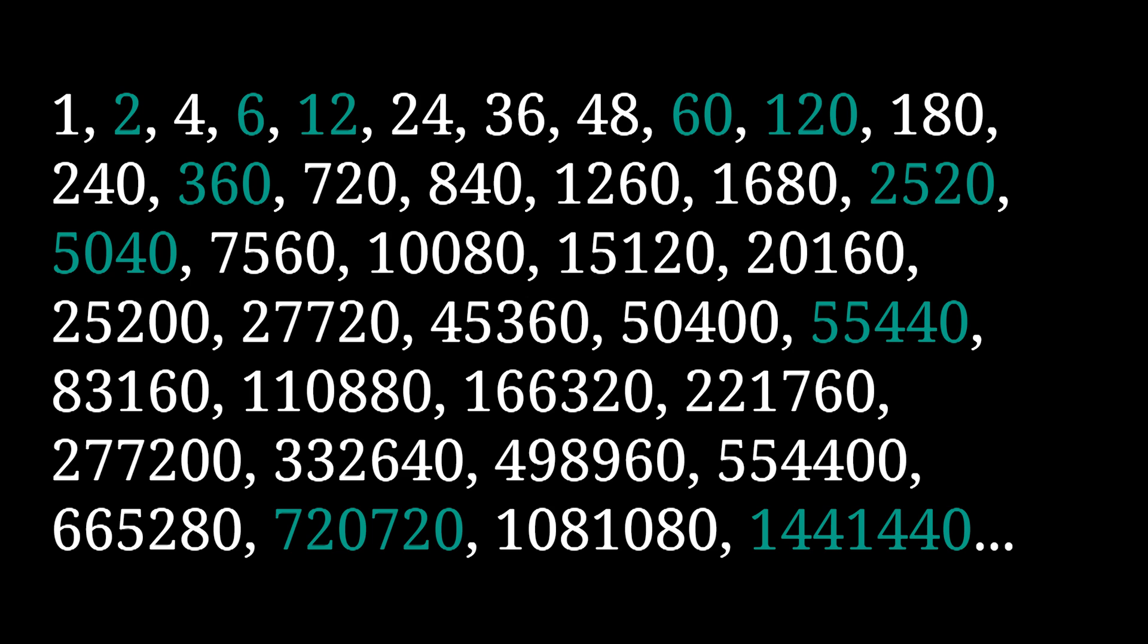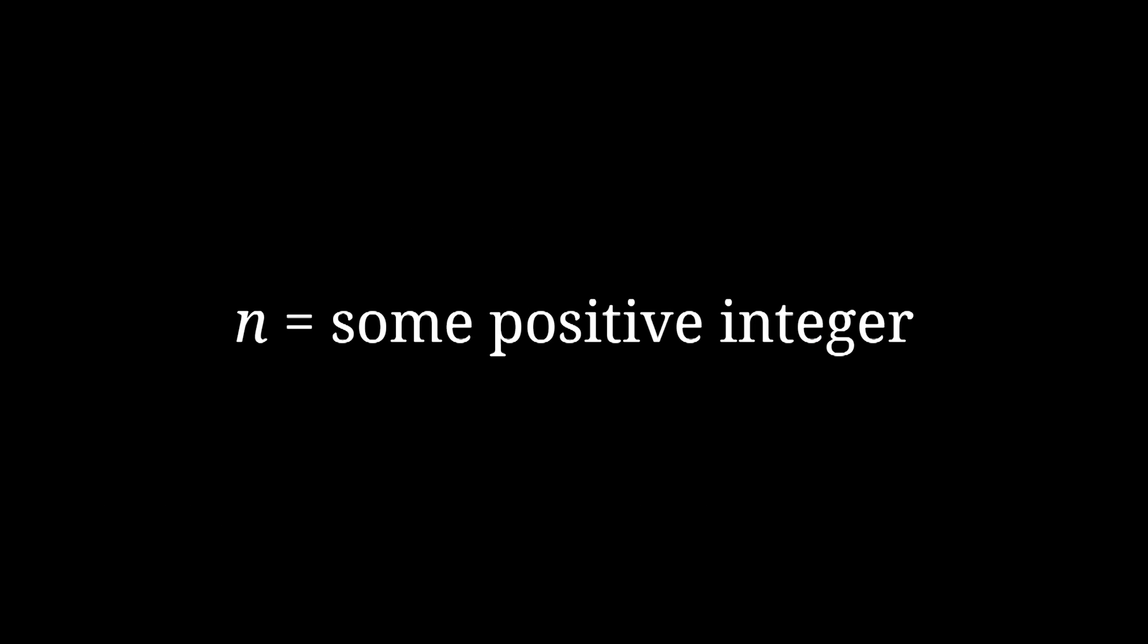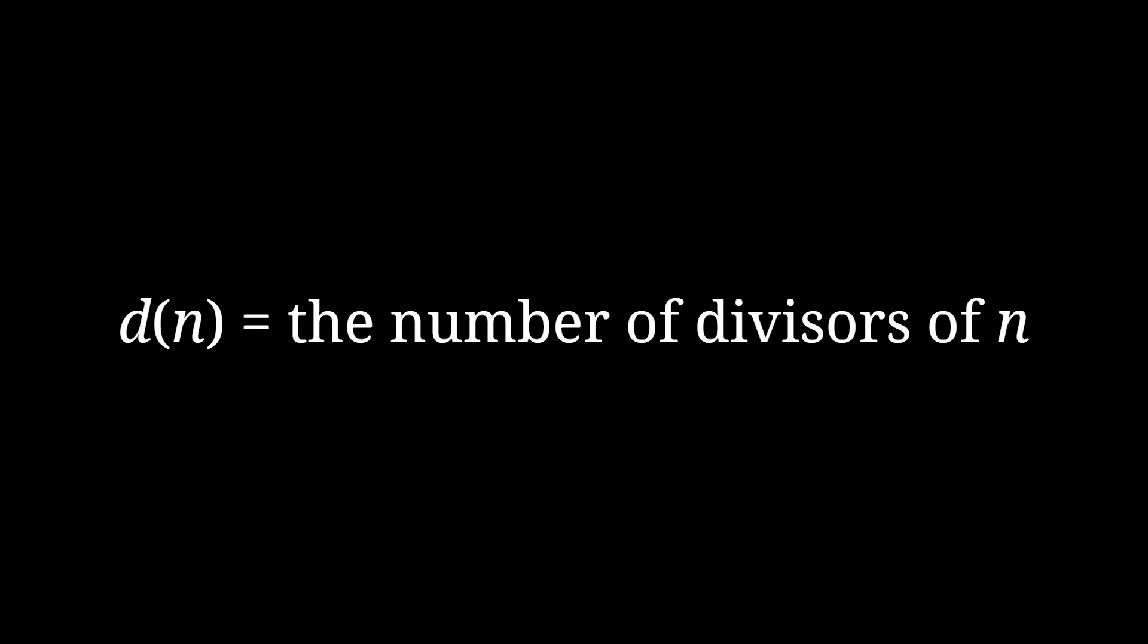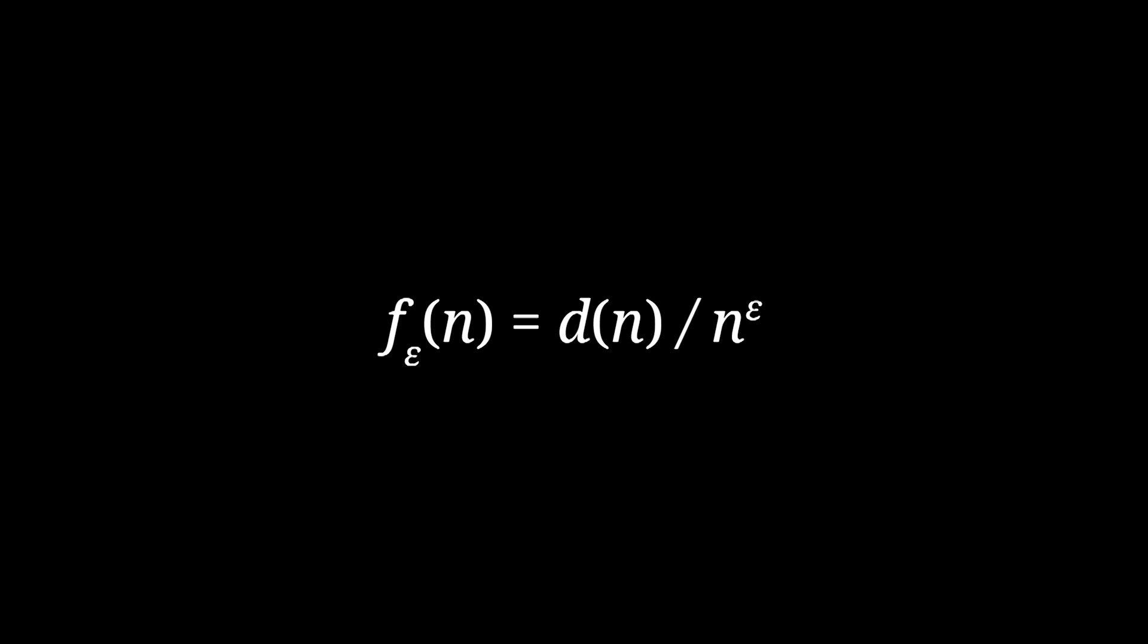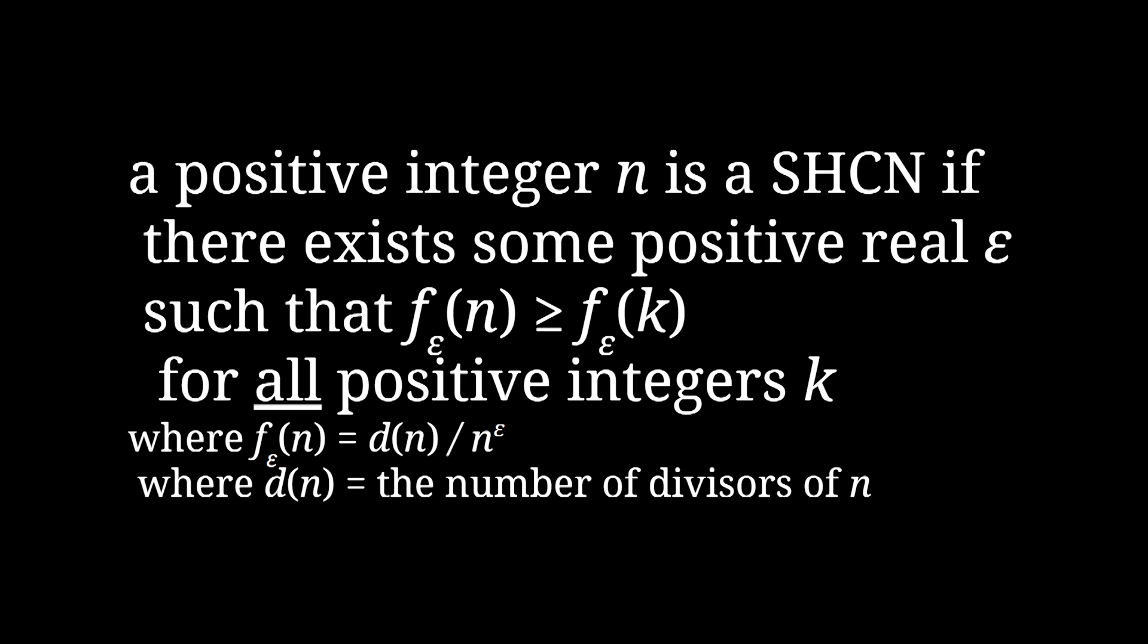So for superior highly composite numbers, you're not just counting divisors, you're doing something a bit more complicated. So you take your positive integer n, right, and you count how many divisors it has. Now, pick some small positive real number epsilon and raise n to the power epsilon. Now, take the number of divisors of n and divide it by n to the epsilon. If a number is a superior highly composite number, that means that there is some number epsilon you can pick where doing that function to this number has an output that's greater than or equal to the output of that function for any other positive integer. What that means is that there's a way of counting divisors that takes into account how small numbers tend to have fewer divisors than large numbers, and using this adjusted way of counting factors, some numbers can be said to be more composite than all other integers.